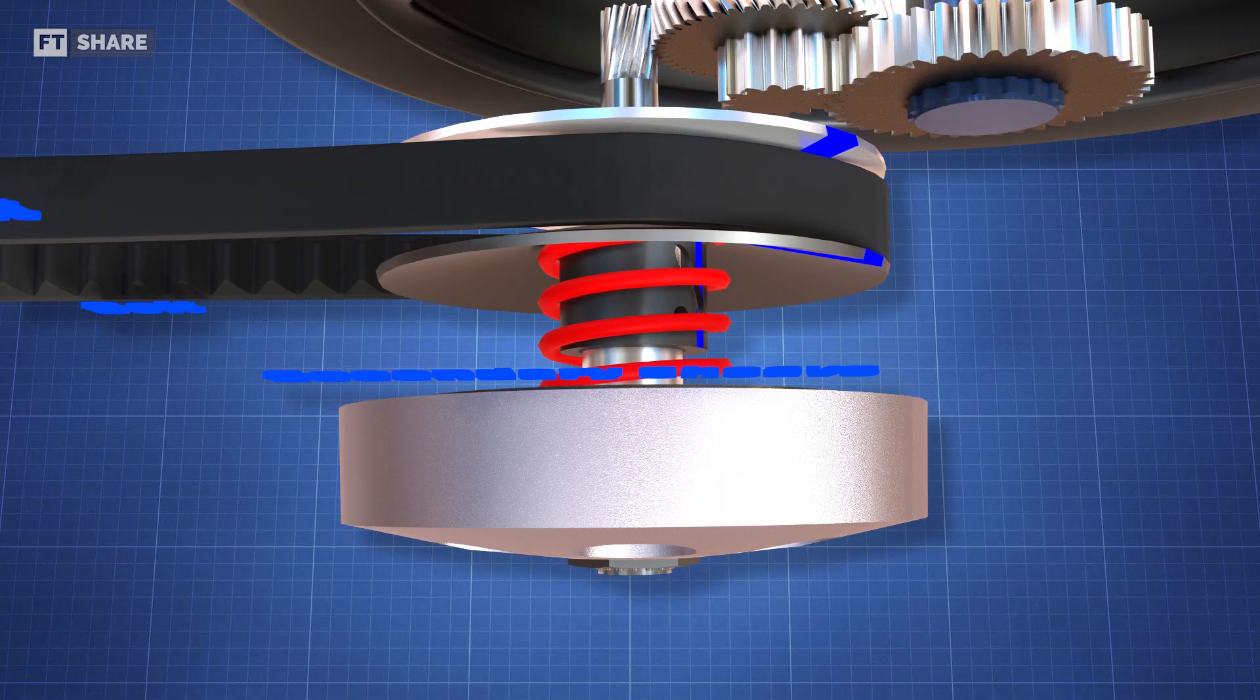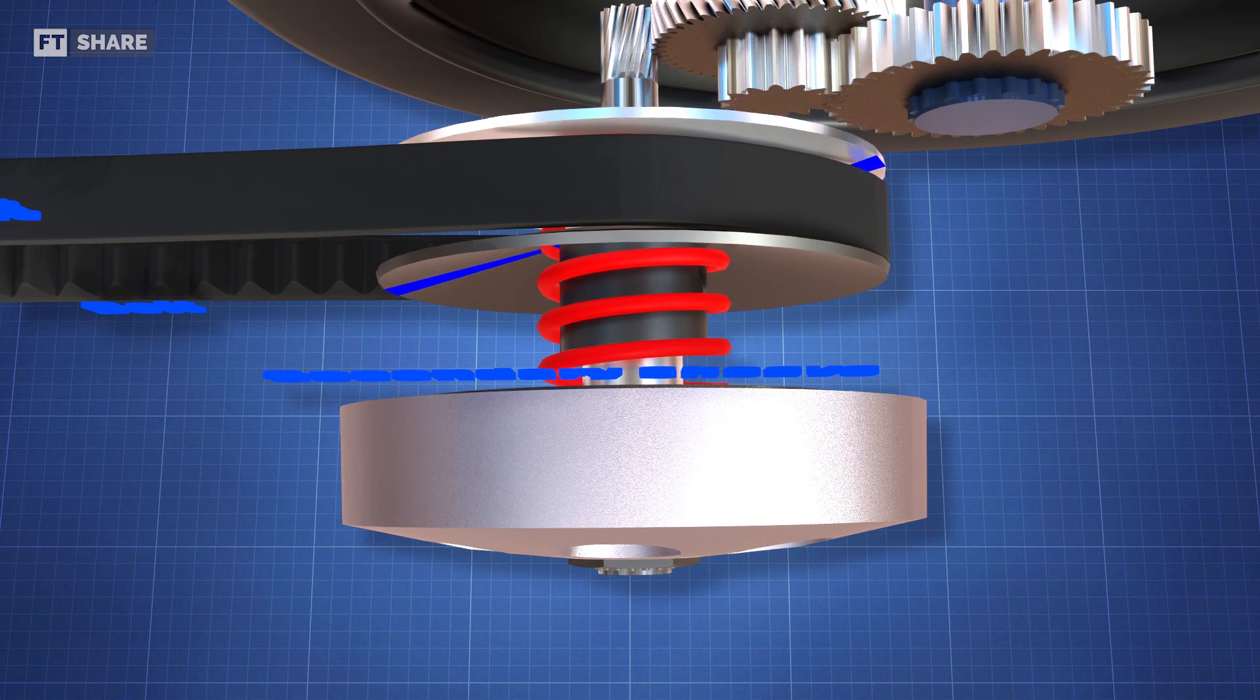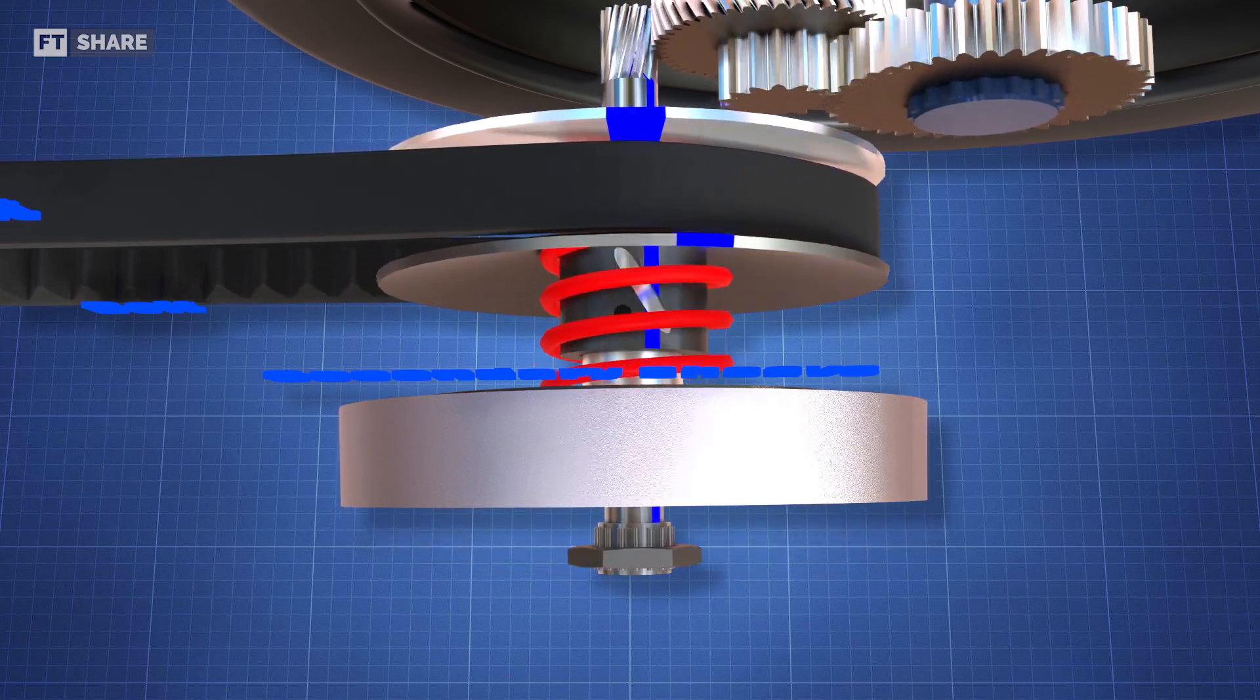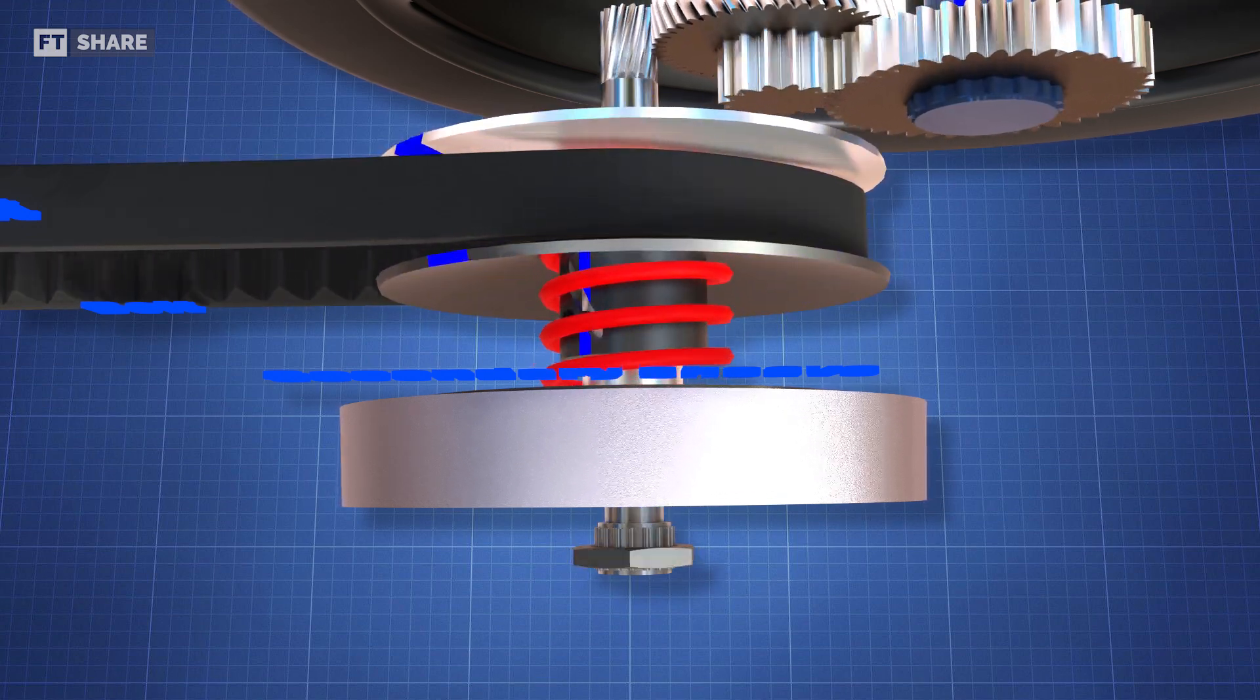More details on the secondary sheave. We'll see a compression spring that functions to keep the sliding plates close together. This condition forces the belt to stay on the largest diameter of this pulley.